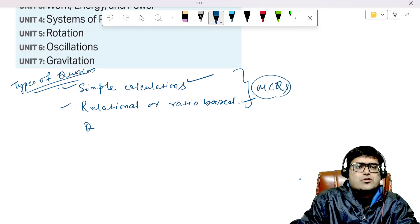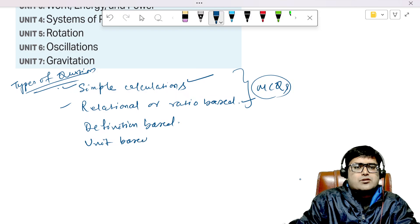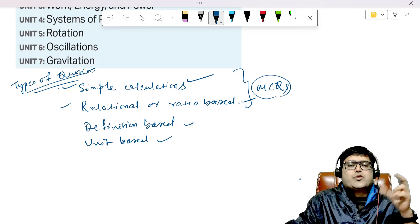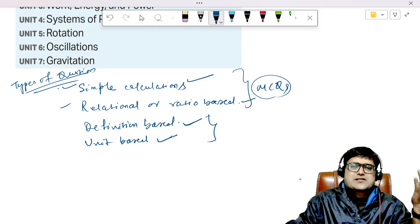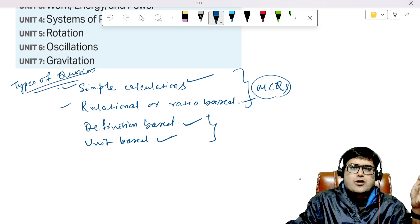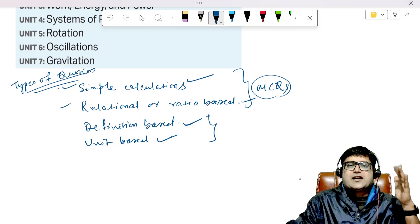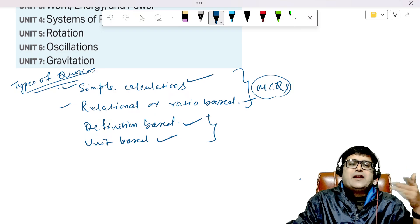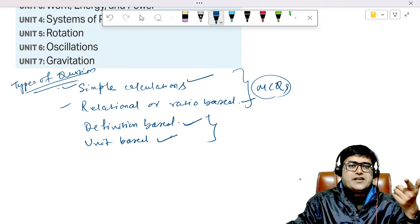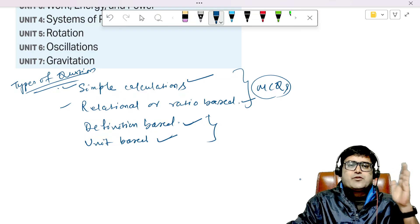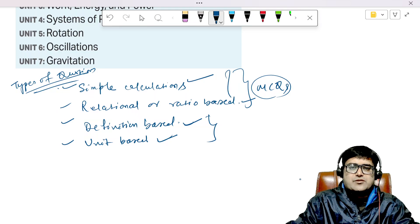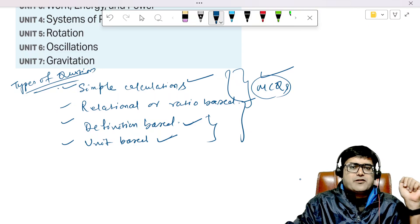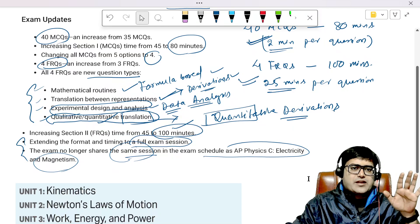In MCQs there is one also definition-based and unit-based. Unit-based means the physical units that we use, so unit conversion type questions will be there. Definition-based questions will be like very few in MCQs. They will ask what's the definition of this particular quantity, you will have four options. The problem is you will be getting confused, you will find multiple options appealing to you. But since in AP Physics C MCQs would have only one correct option, that's where you will be tested how well you know the definitions of the terms.